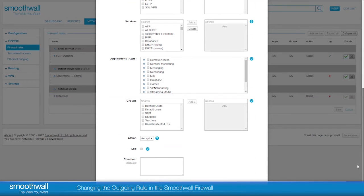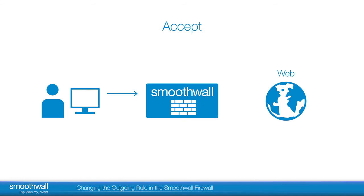There are three actions available for firewall rules. Accept will allow traffic through. The firewall has stateful tracking, which means that it tracks connections. The SmoothWall firewall knows if it has allowed a connection out, and if so, it recognizes it and allows it back without the need for you to specify an associated incoming rule.